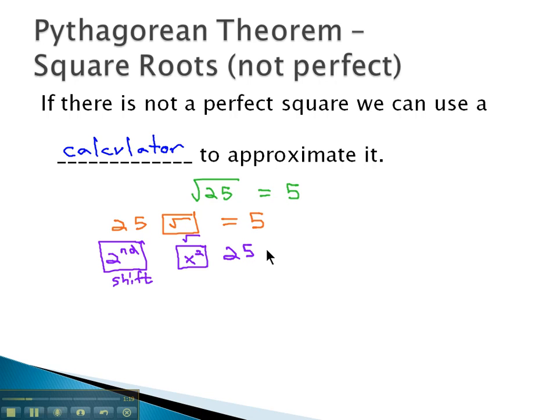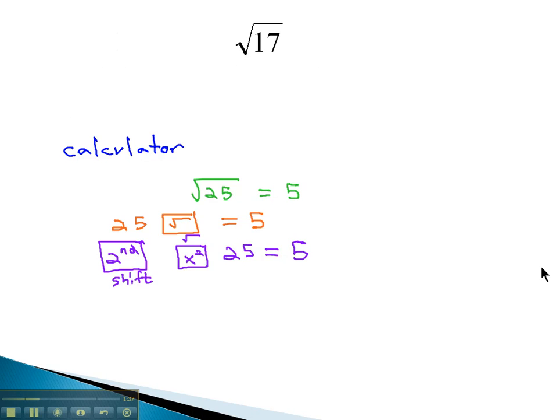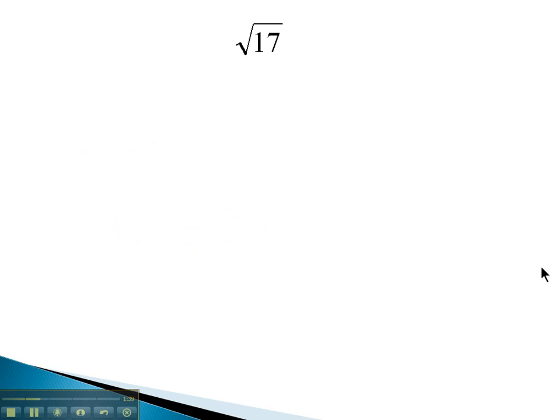And then, you can type in the 25, and that should give you an answer of 5. Or it might be some combination of these, and it's important we know how to use our calculator successfully to give us a square root. So make sure you're aware of how your calculator works, so that we can use it to approximate square roots, such as the square root of 17.